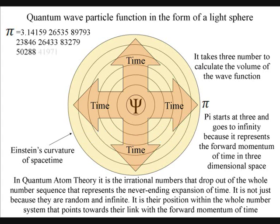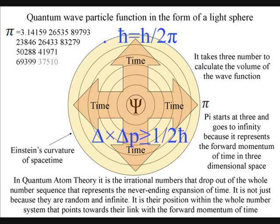We also have pi in the equation for Heisenberg's uncertainty principle. This is why pi is an irrational number, and keeps on going forever, just like time.